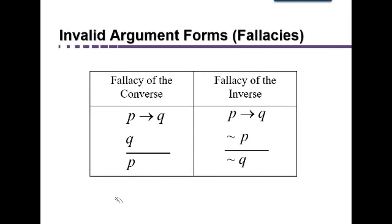There are also some very common reasoning errors that people make that are invalid argument forms that happen a lot. For example, P implies Q, Q happens, therefore P happens. That's incorrect. So that's called the fallacy, or invalid argument, the fallacy of the converse.